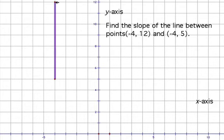And you'll note that here we have a rise of negative 7, and a run of 0, because we're not going left or right. There is no run.